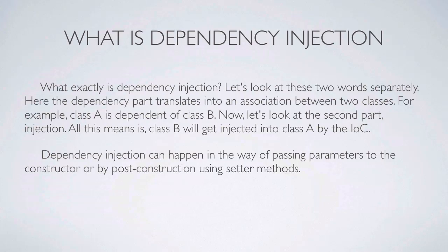So what exactly is dependency injection? Let's look at these two words separately. The 'dependency' part translates into an association between two classes. For example, if we have in one class an instance of another class — say a class 'Bear' which has a class 'Size', and the Size class has height, weight, length and width — then Bear has a variable of type Size. That's a simple example.